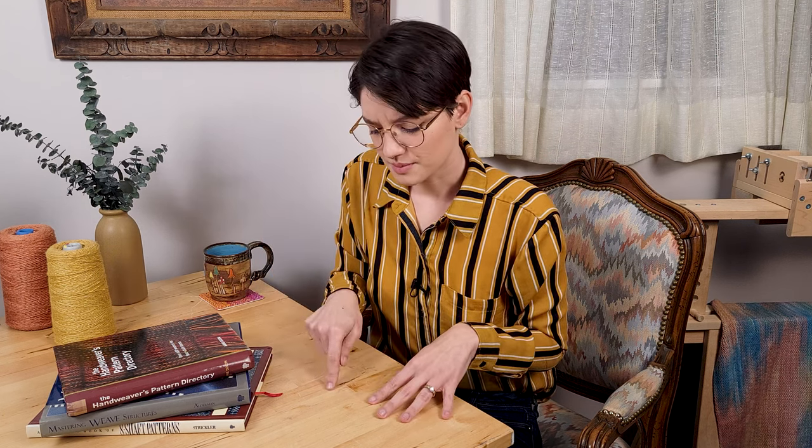Now that you know the basics of reading weaving drafts, the world is going to open up to you in kind of a spectacular way. You'll be eating at a restaurant or sitting on a friend's couch and you'll notice the upholstery underneath you and think, can I make that? What warps go under what wefts here? Can you tell I know from experience?